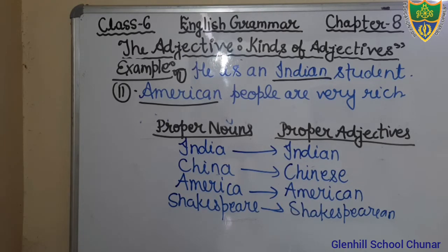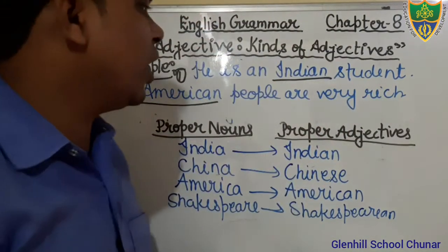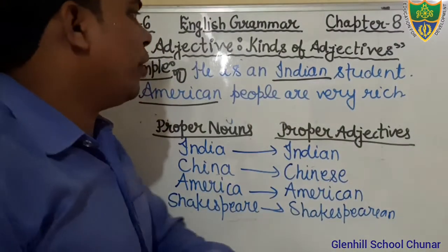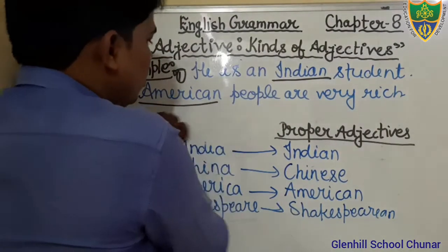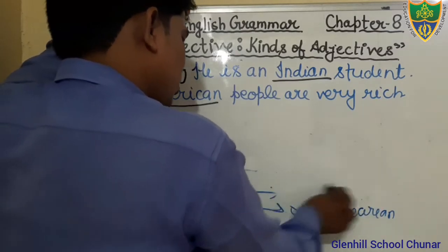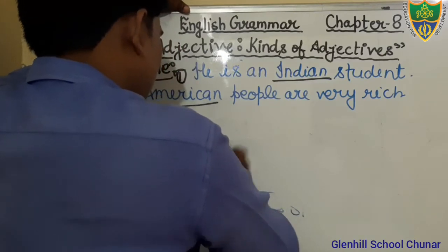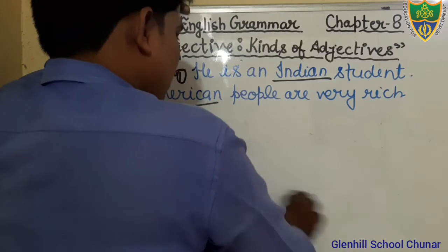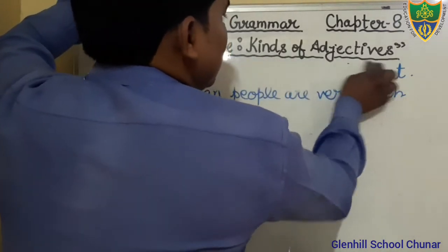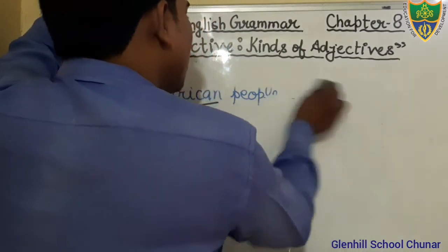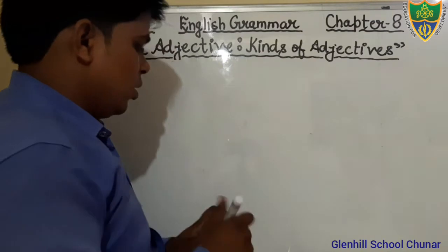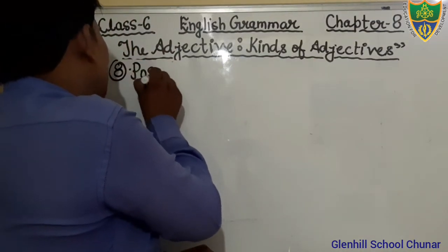So just complete it in your notebook. After completion, you will put the heading number 8 — that is Possessive Adjective. Let's put the heading: Possessive Adjective.